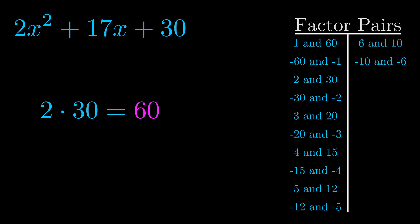The b value is the coefficient on the x term. That's the middle term, the one that we haven't done anything with yet. And really this is the only factor pair that we need.